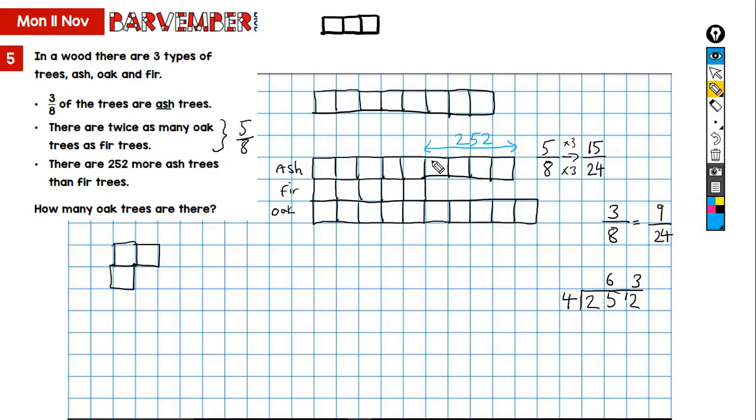Okay, so that tells me now that each of these is 63. Okay, as is all of the other 24ths are 63. And what are we asked? We're asked how many oak trees are there. Well, 1, 2, 3, 4, 5, 6, 7, 8, 9, 10. So that's 10 times 63. So 10 times 63 equals 630 oak trees.